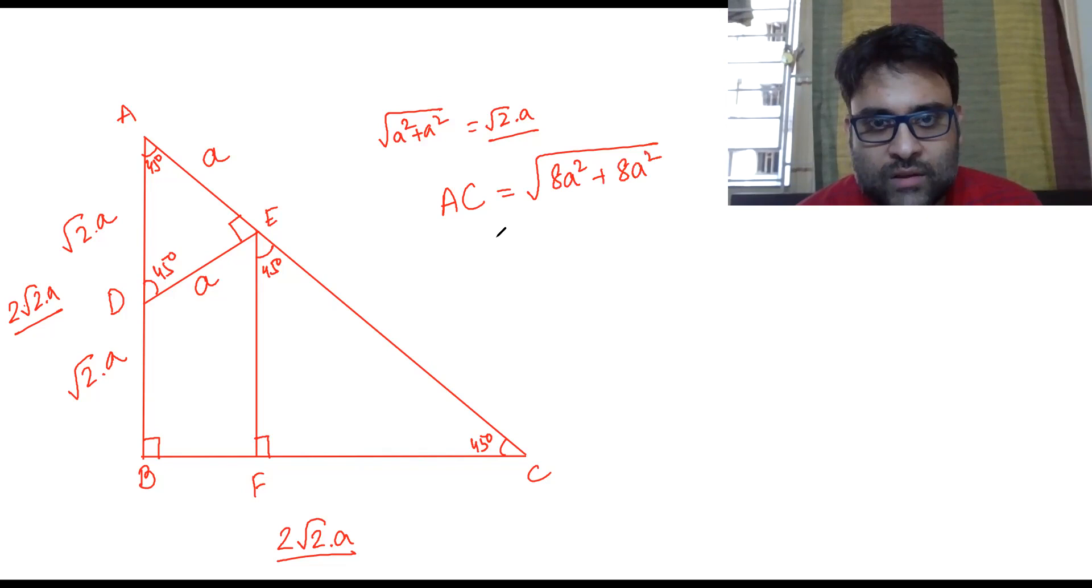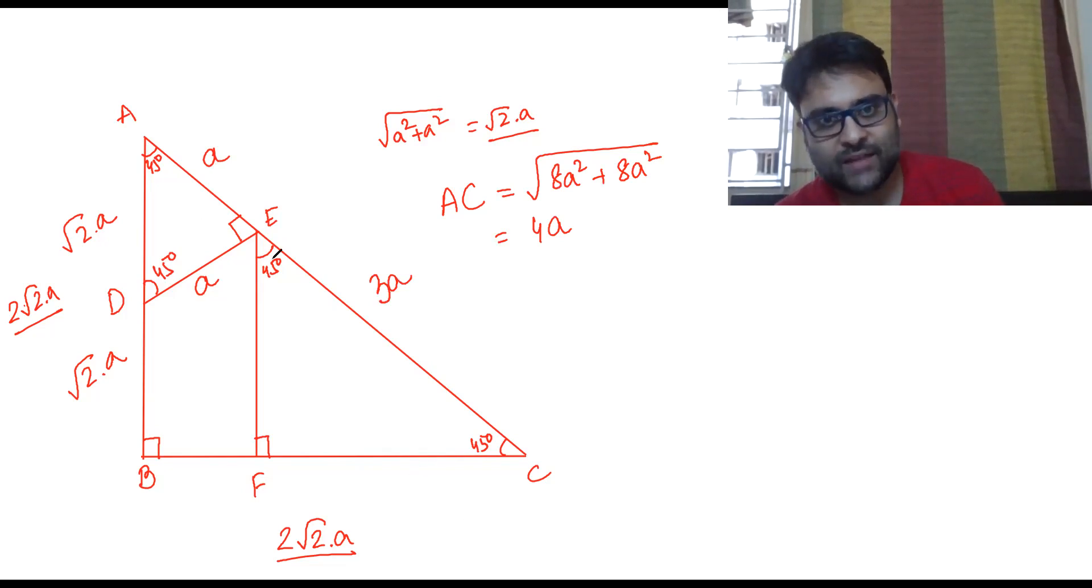So this EC part is 3a, this is a, this is 3a. Now if this is 3a, what will be EF and FC?